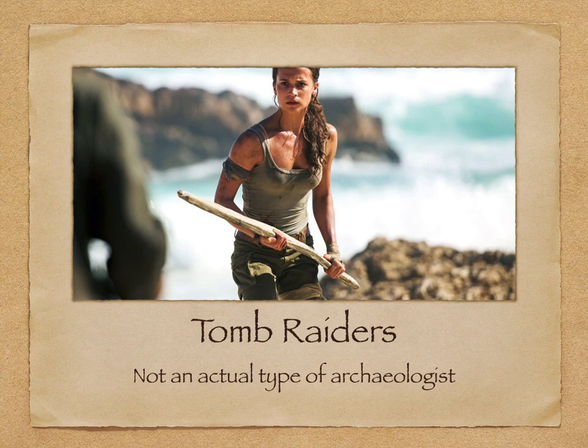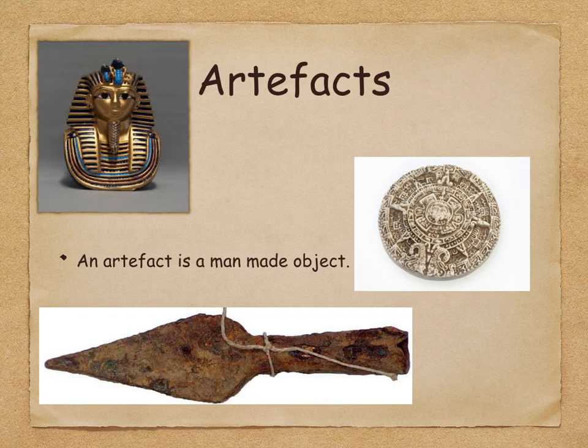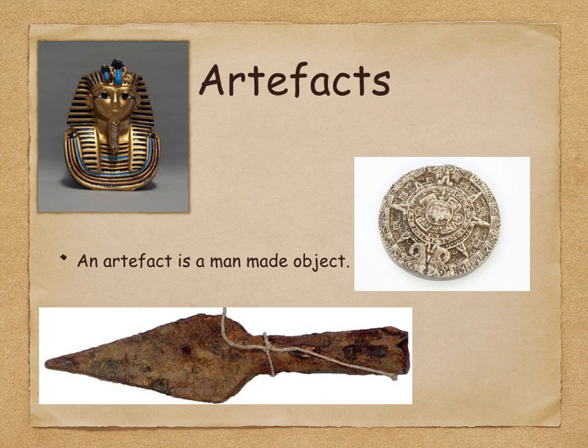Archaeologists mainly deal with artifacts. An artifact is a man-made object — it can range from a house, a coin, or an arrowhead to a little bit of stone from the Stone Age that has been polished or sharpened to improve hunting ability or quality of life. It can also be amazing decorative ornaments, like the Egyptian ornament in the top left corner — anything that is made by humans.